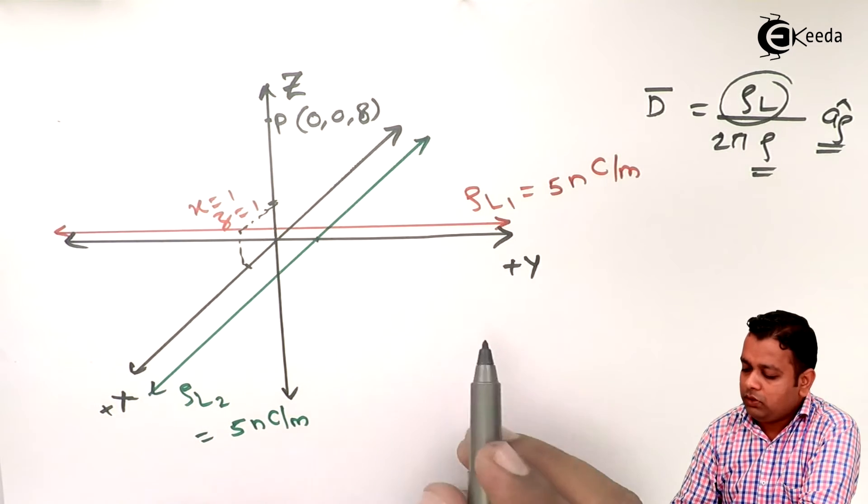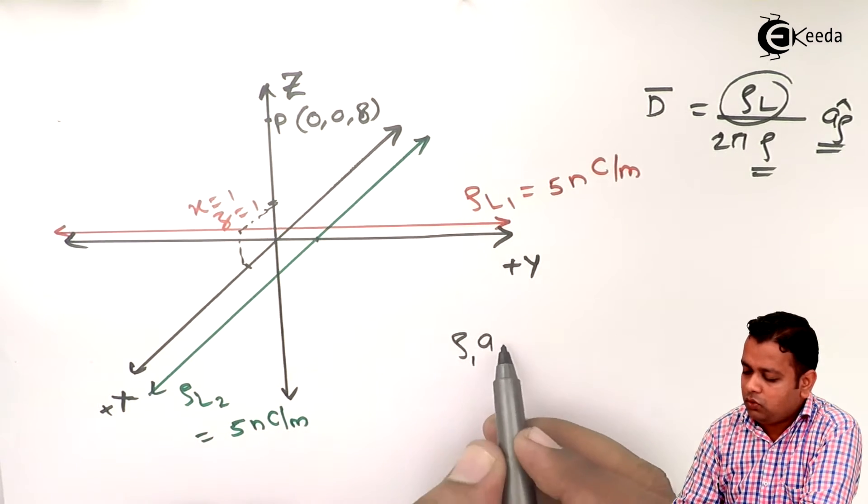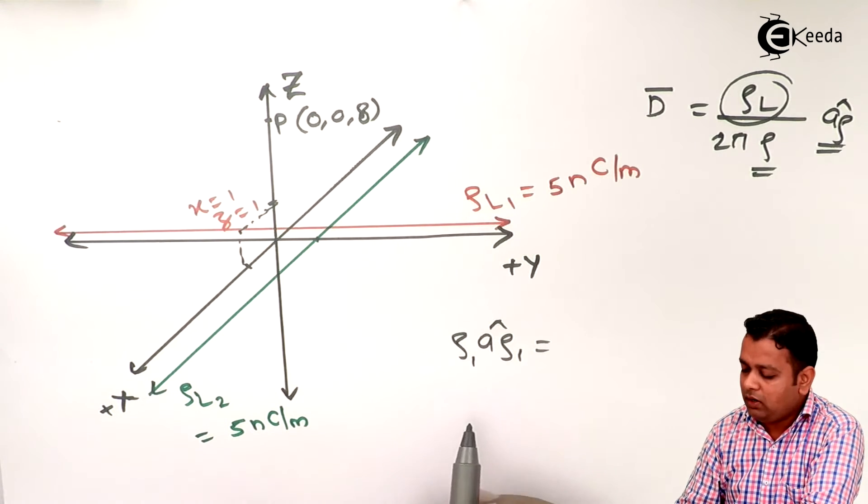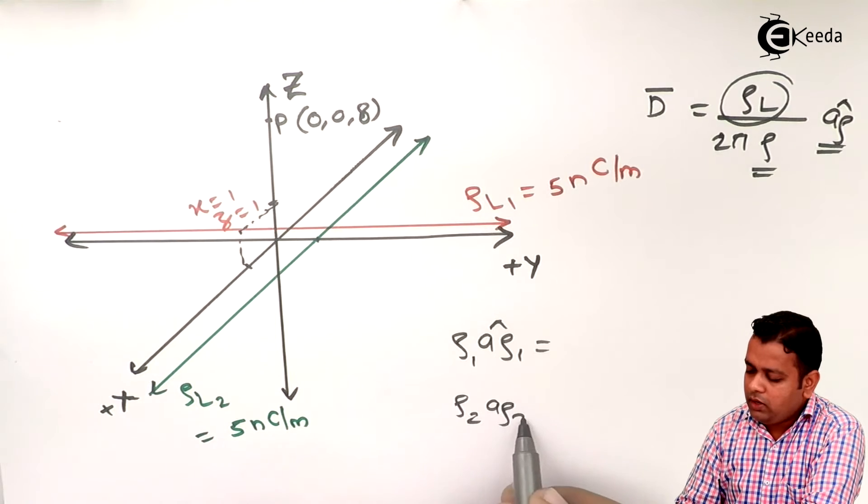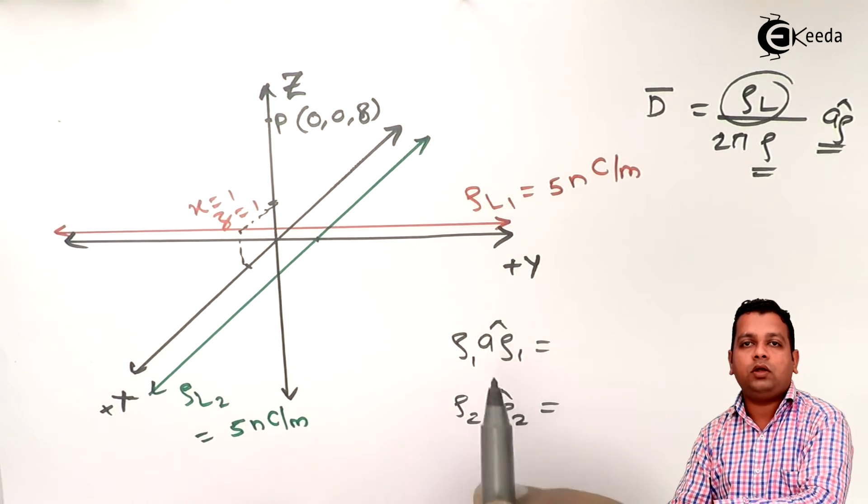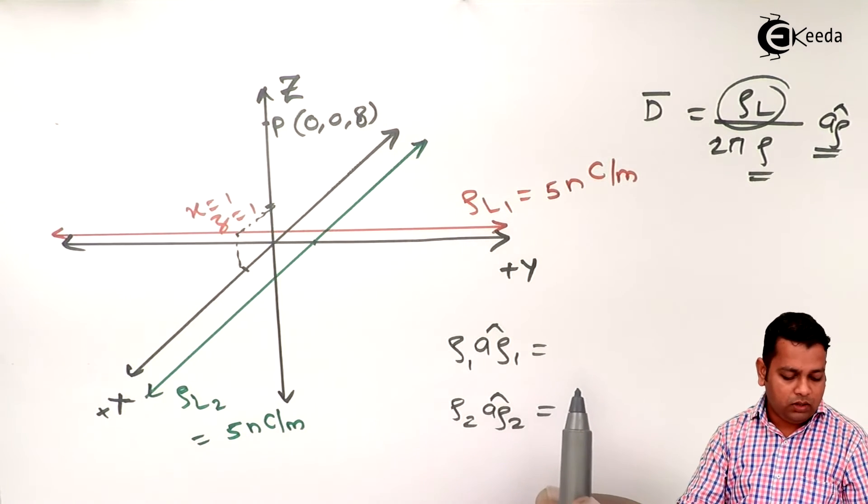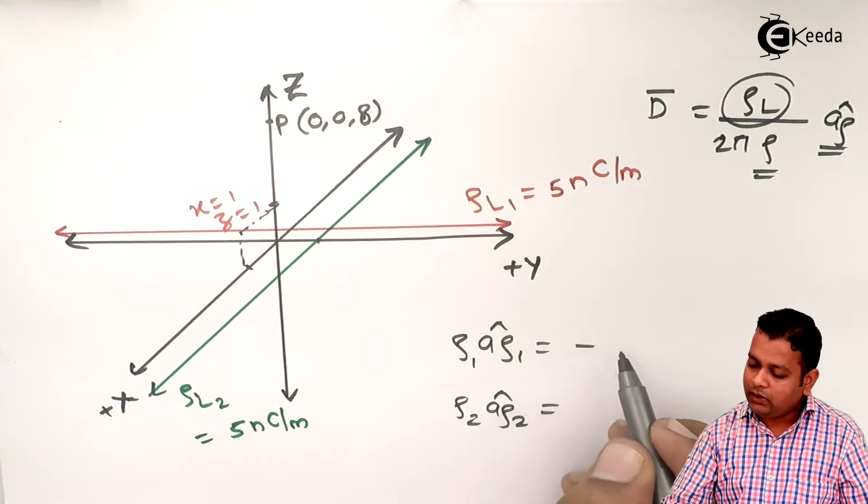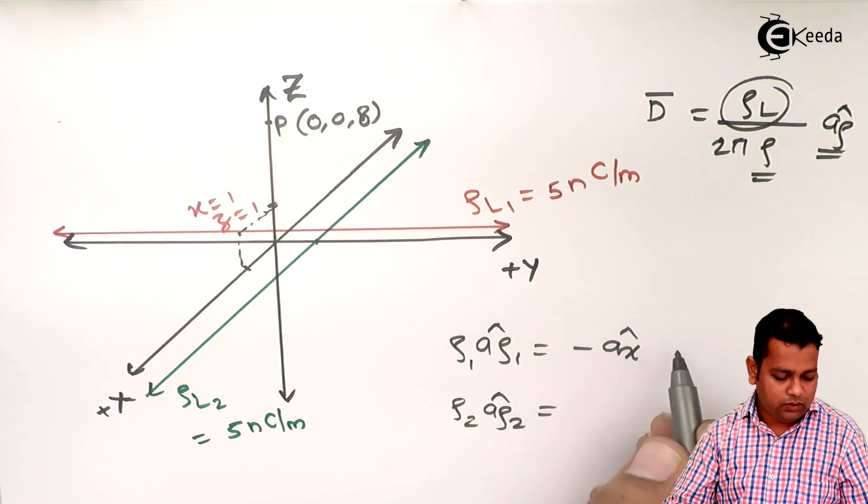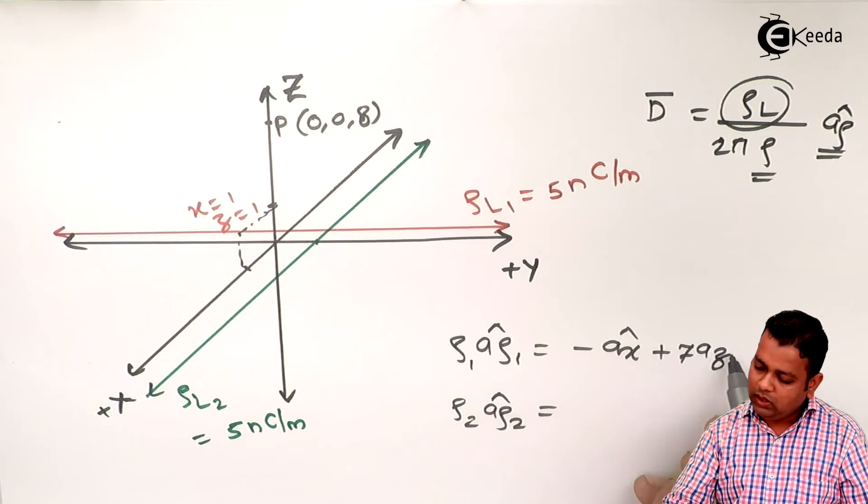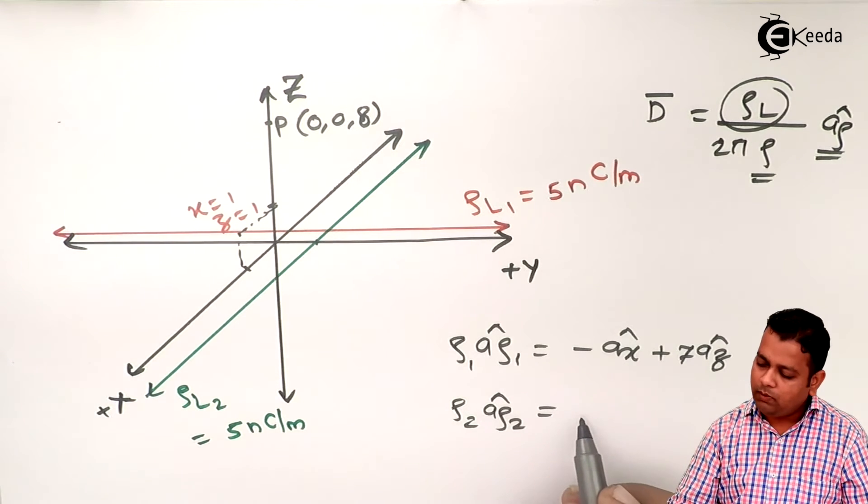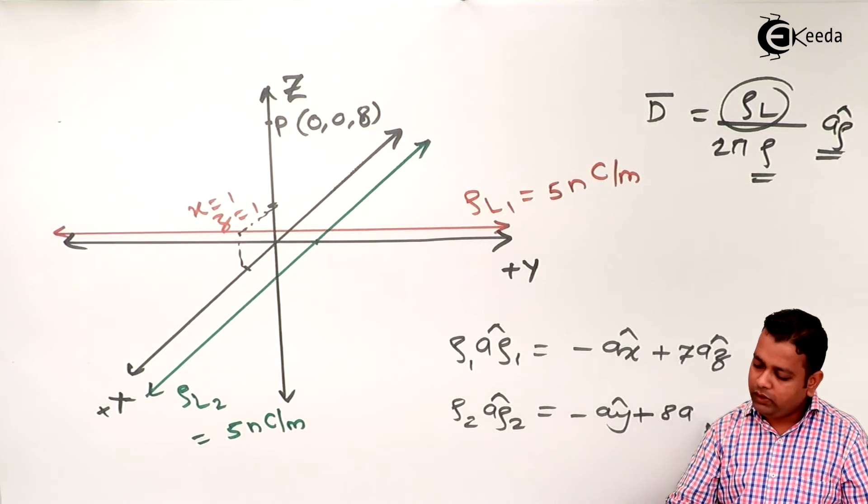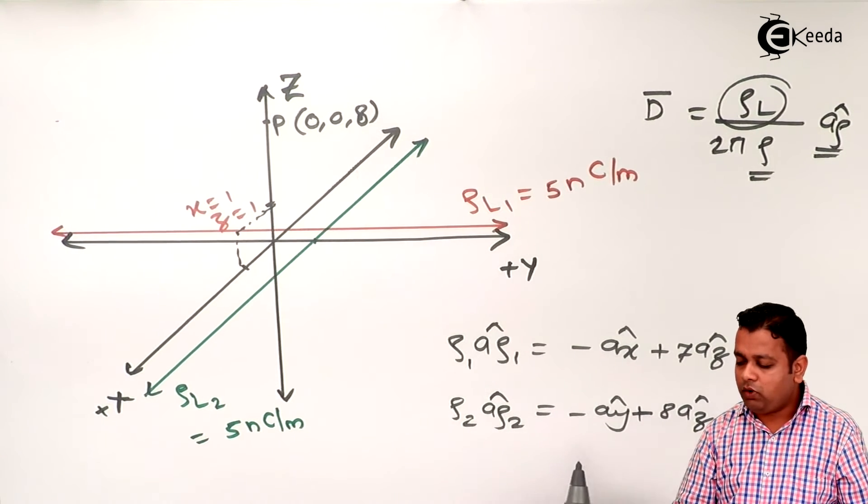Now ρL values we have for both the line charges, we require rho and a rho cap direction. So for the first line charge I shall denote ρ1 a ρ1 cap, and for the second line charge I shall denote ρ2 a ρ2 cap.